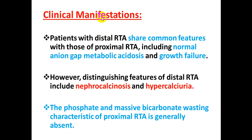Clinical manifestations of distal RTA are generally similar to proximal RTA: growth failure, polyuria, dehydration, vomiting, and constipation, with normal anion gap metabolic acidosis. The most important distinguishing feature of distal RTA is nephrocalcinosis and hypercalciuria.